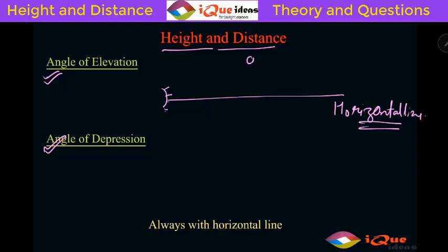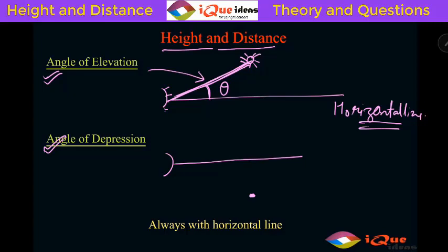Suppose there is an object up here and you want to see it — you will roll up your eyes. By whatever angle you roll up, this angle is called the angle of elevation. So this theta is the angle of elevation. Similarly, if there is an object at the ground and your eye level is above it, you usually see in a horizontal line. The angle formed when looking up is always measured with the horizontal line.